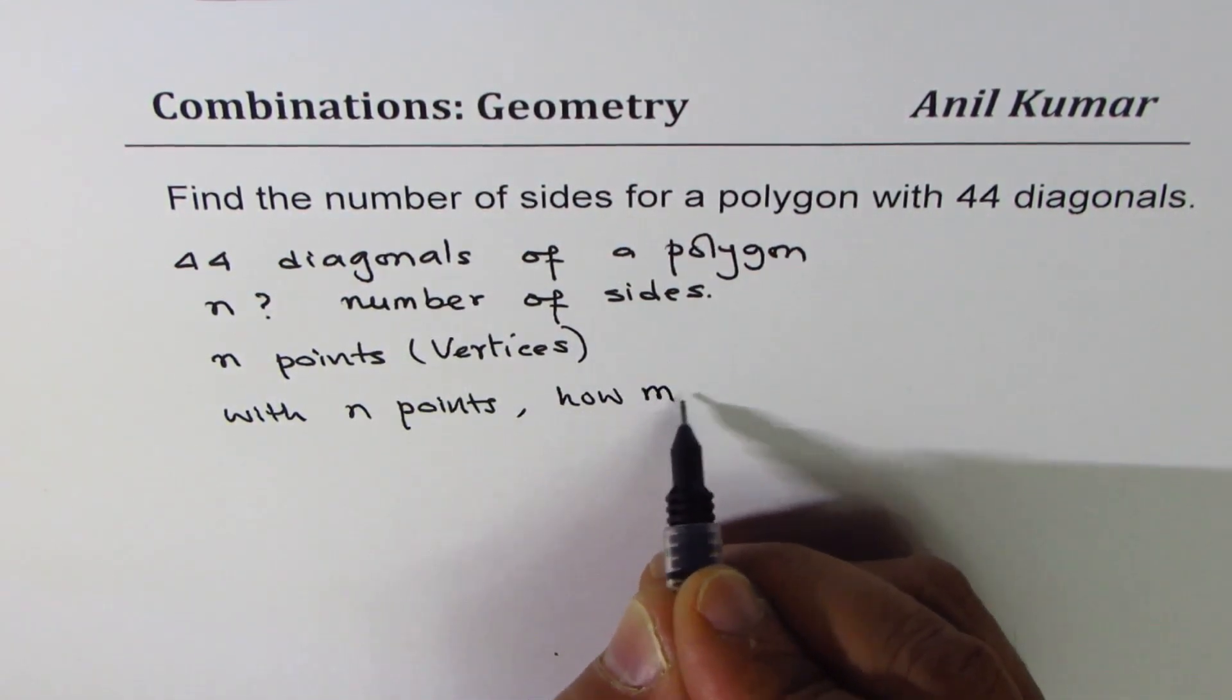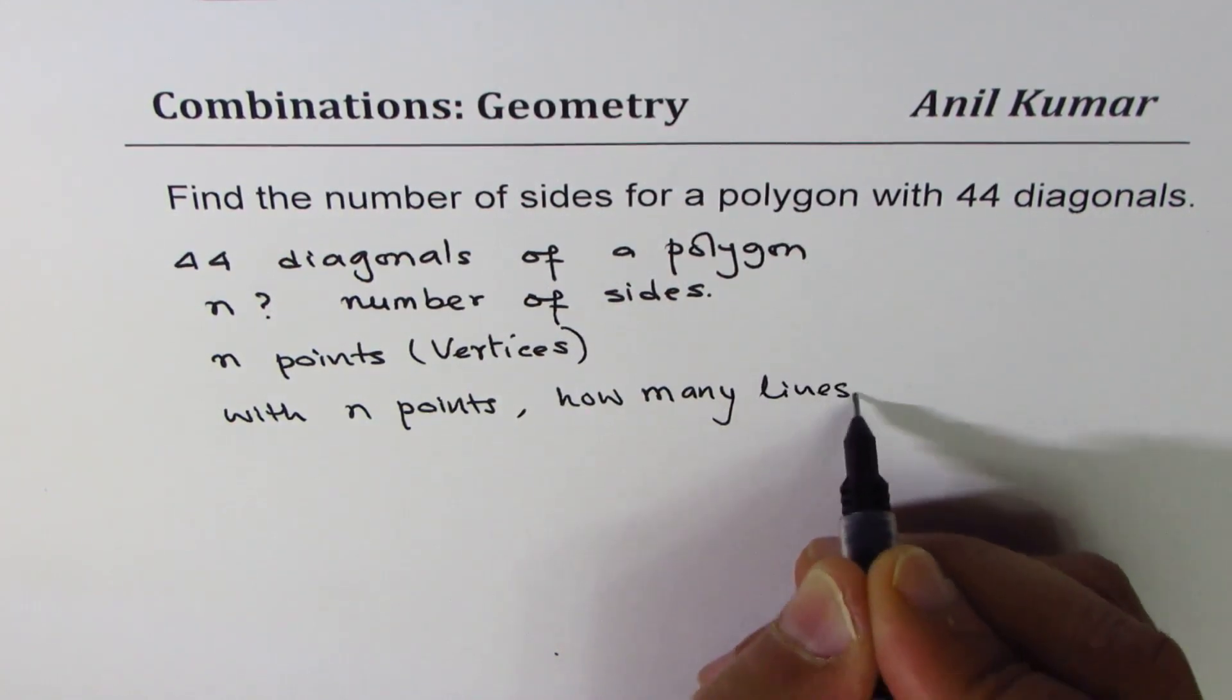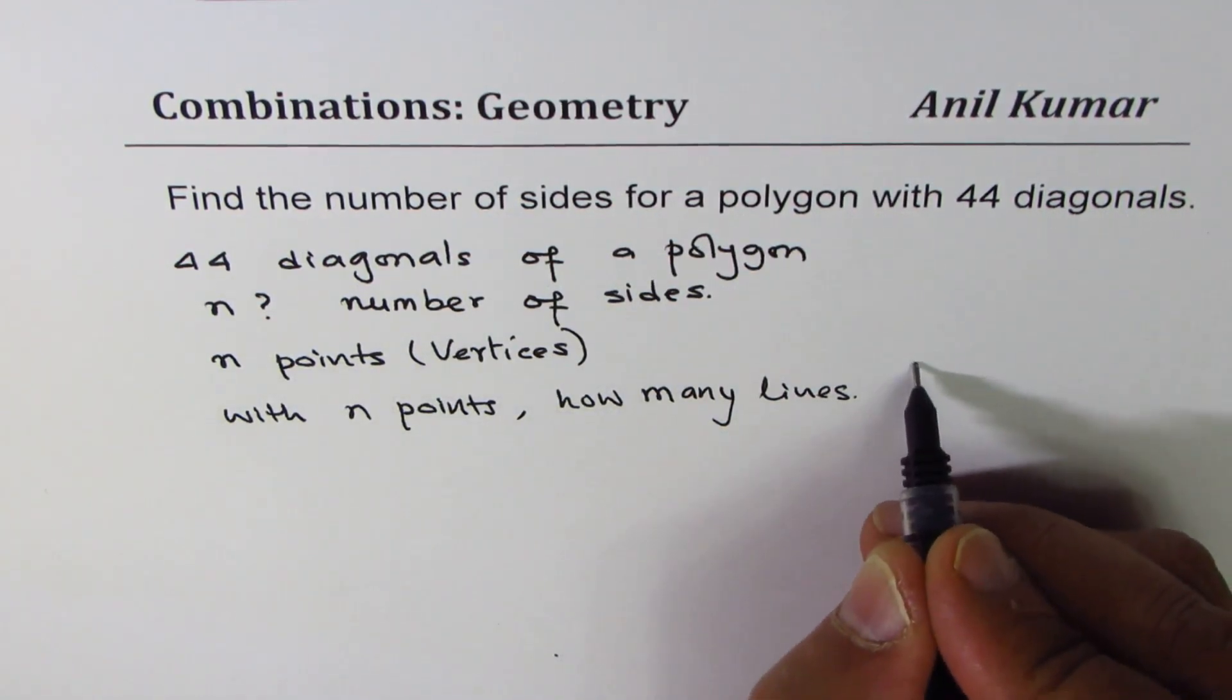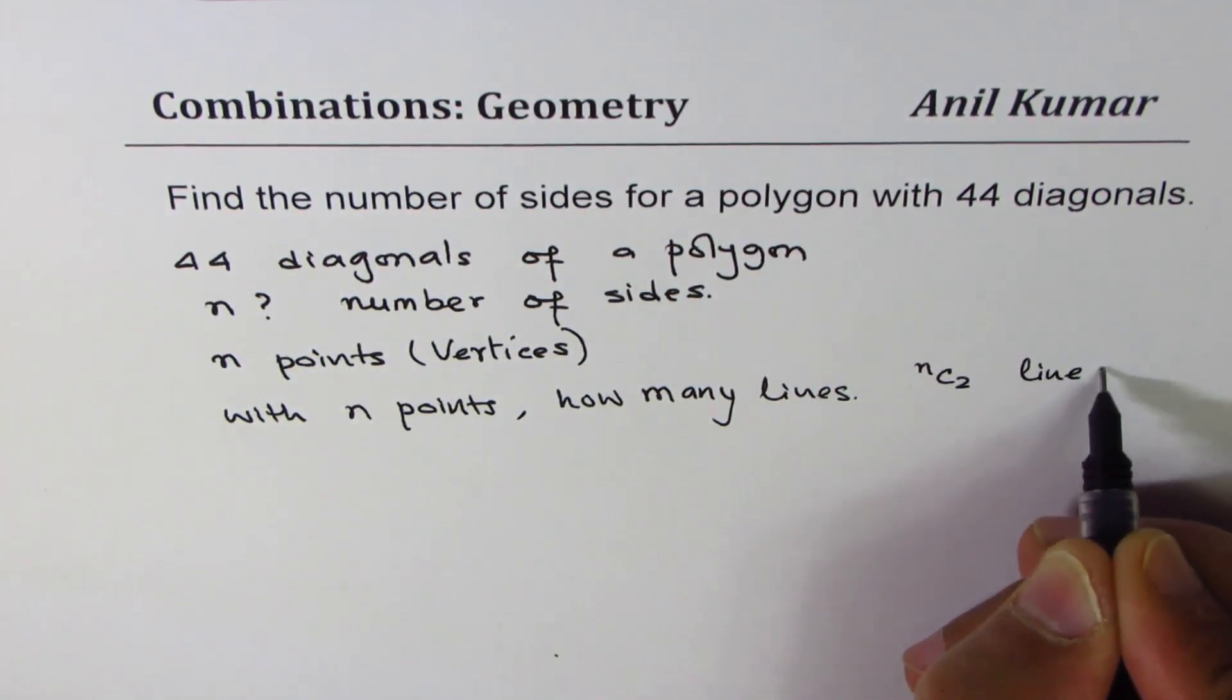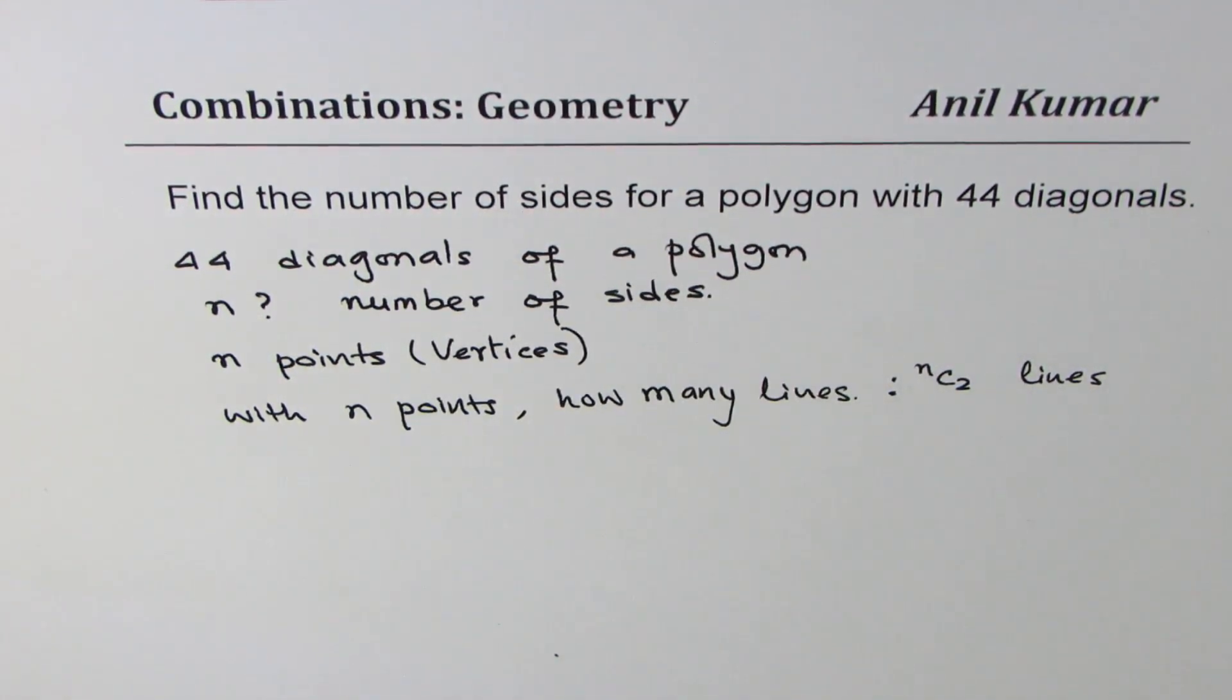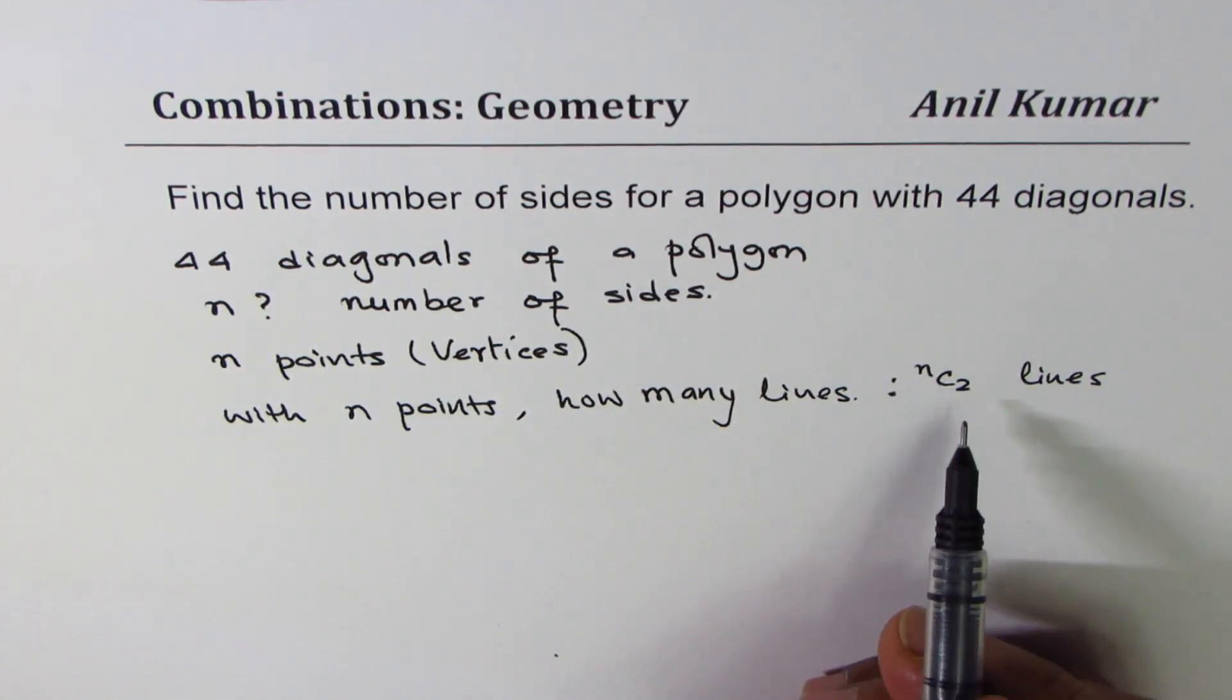How many lines can you draw? So for each line you need two points, so with n points we can draw nC2 lines. Do you see that? With n points you can draw nC2 lines. Now these are the total number of lines which can be drawn with n points.